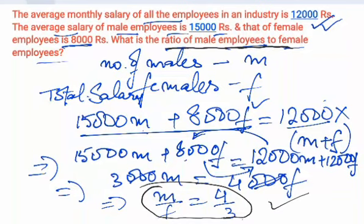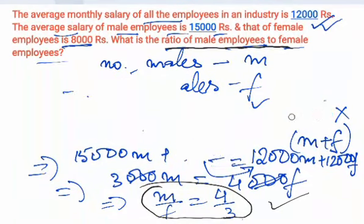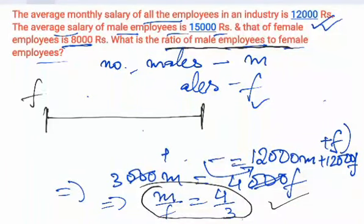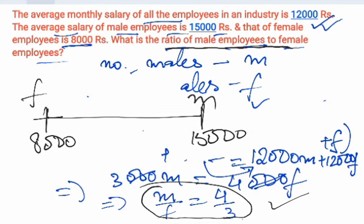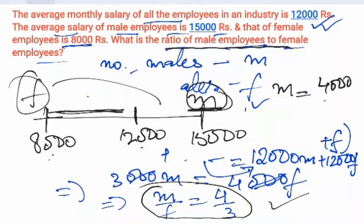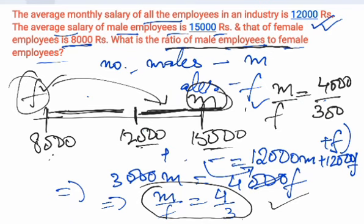Now, as we have seen in the mixture allegation chapter, there is a shortcut concept. Suppose this is a number line. Females are on one side getting a salary of 8,000, and males are on the other side getting 15,000. The average of 12,000 lies between them. The number of male employees M is directly proportional to the distance between 8,000 and 12,000, which is 4,000. And F is directly proportional to the distance between 15,000 and 12,000, which is 3,000. So M upon F equals 4 upon 3.